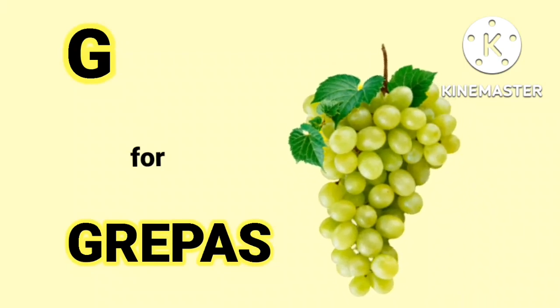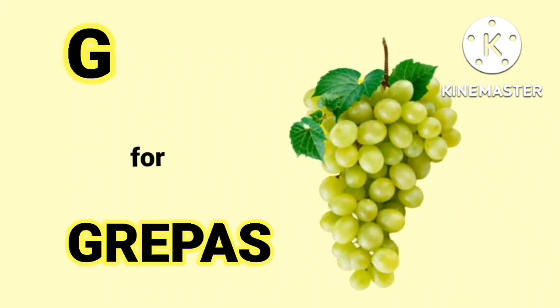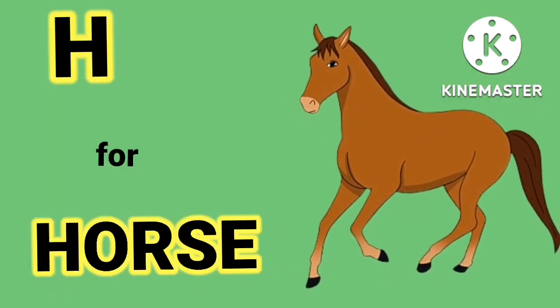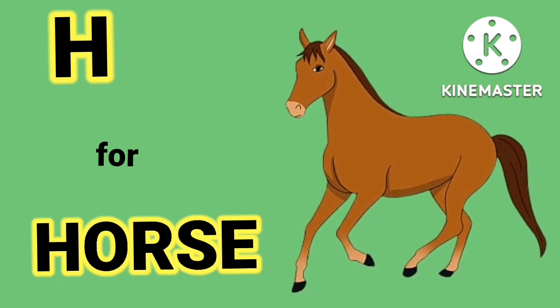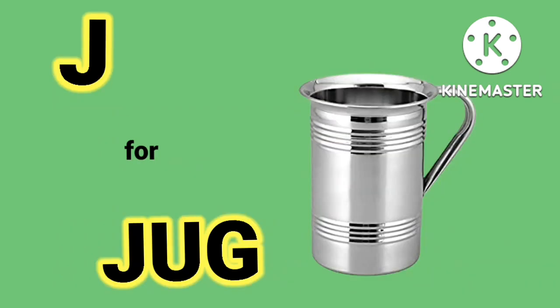G for grapes, grapes, ungoor. H for horse, horse, ghoda. I for ink pot, ink pot, मैंने शाही की दवात.